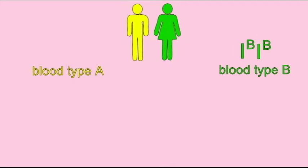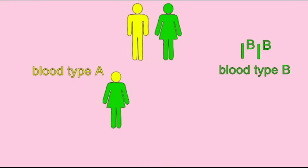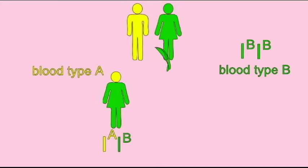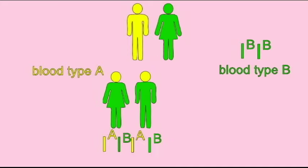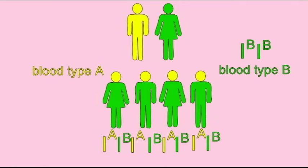The alleles for blood types A and B both result in specific sugar chains put on the surface of red blood cells, and neither will counteract the other. So if one receives an allele for being blood type A from one parent and an allele for being blood type B from the second parent, this individual would then be blood type AB.